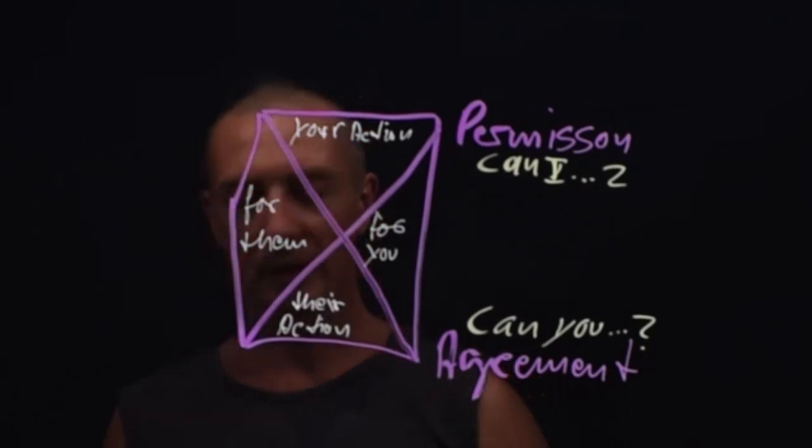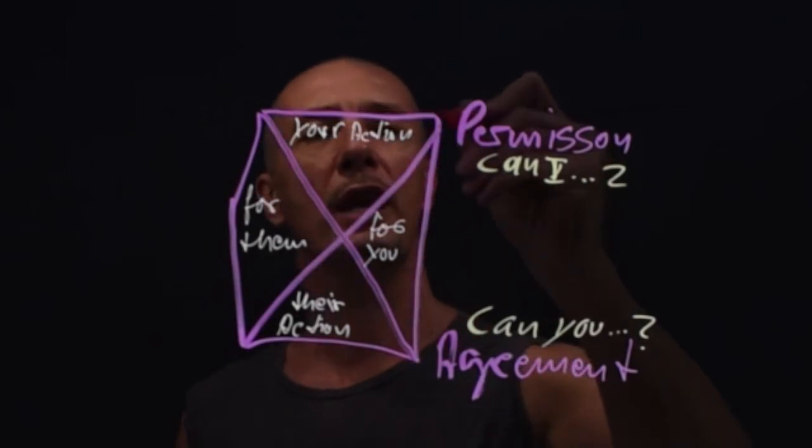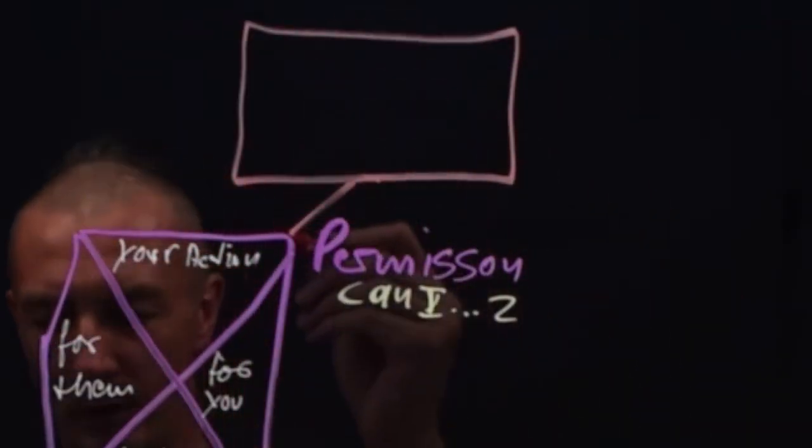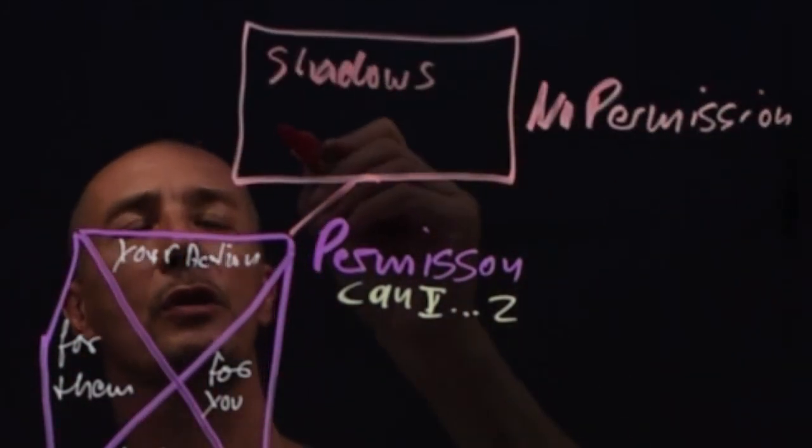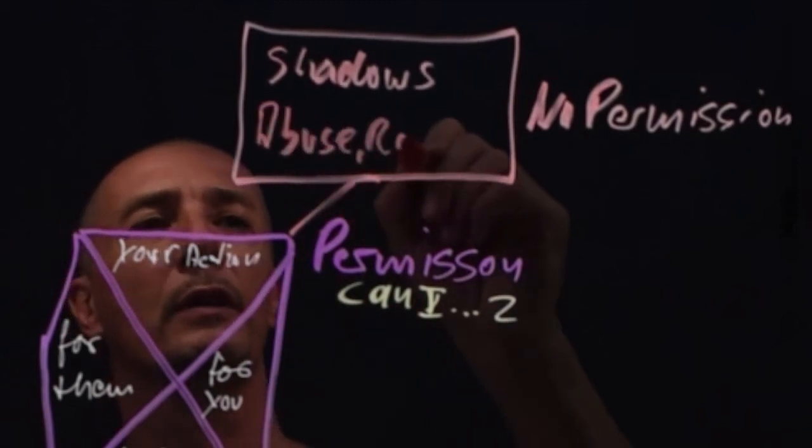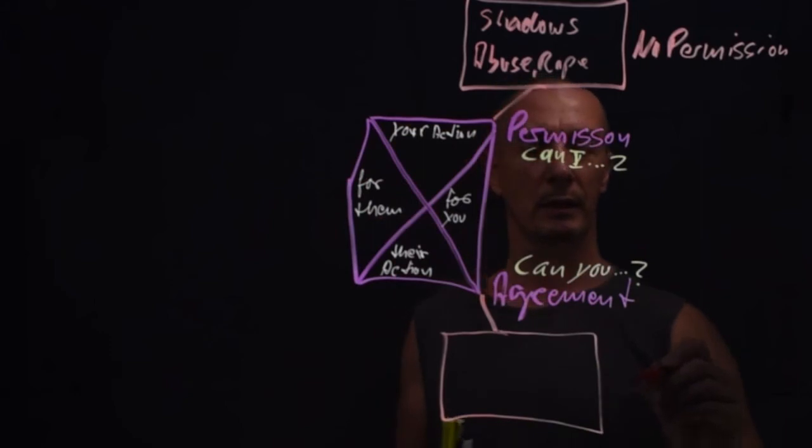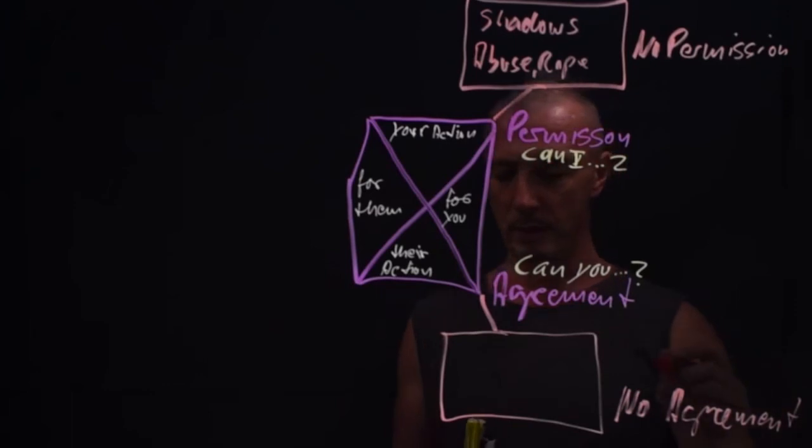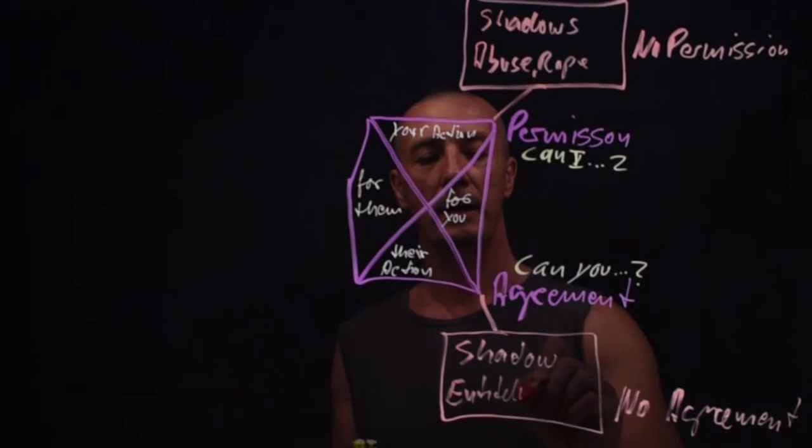So this becomes the next part. If you can't ask for what you want, you operate out of the shadows. So if there is no permission, you have the shadows of abuse and rape, for example. If you're down here and you want somebody else to do something, an action, and you have no agreement. This is the shadow of entitlement, for example, or expectation.